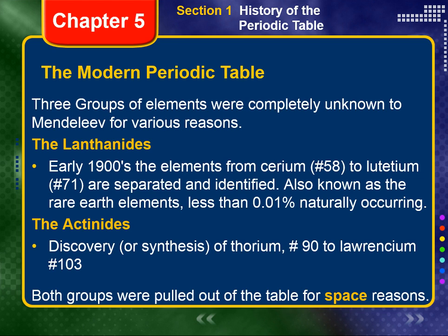The lanthanides. The next step in the development of the periodic table was completed in the early 1900s. It was then that the puzzling chemistry of the lanthanides was finally understood. The lanthanides are the 14 elements with atomic numbers between 58, Cerium, CE, and 71, Lutetium, LU. Because these elements are so similar in chemical and physical properties, the process of separating and identifying them was a tedious task that required the effort of many chemists.